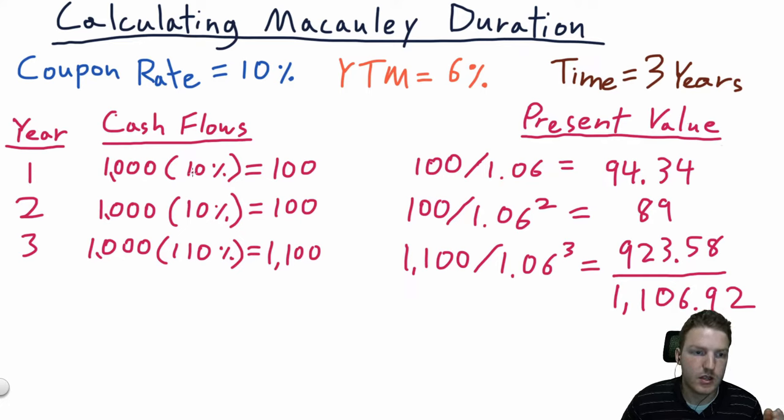The first year, we're just going to get the notional amount of the bond, so $1,000 times the coupon rate, which is 10%, so $100. Same as in year 2, we'll just receive $100 at the end of year 2. At the end of year 3, we're going to get the full notional amount of the bond, which is $1,000 and a 10% interest added on, so we'll get $1,100.